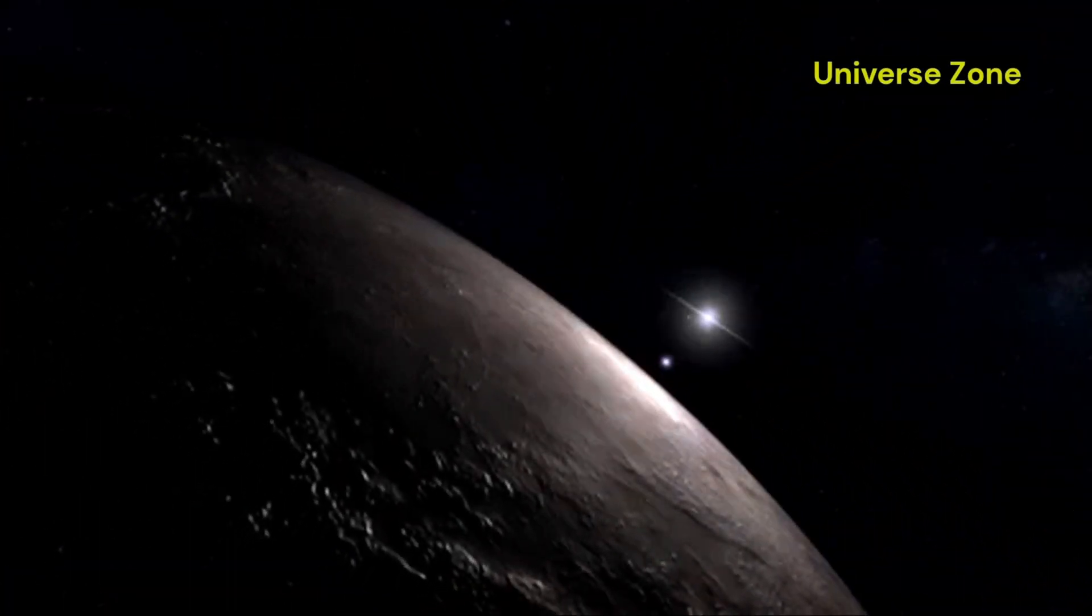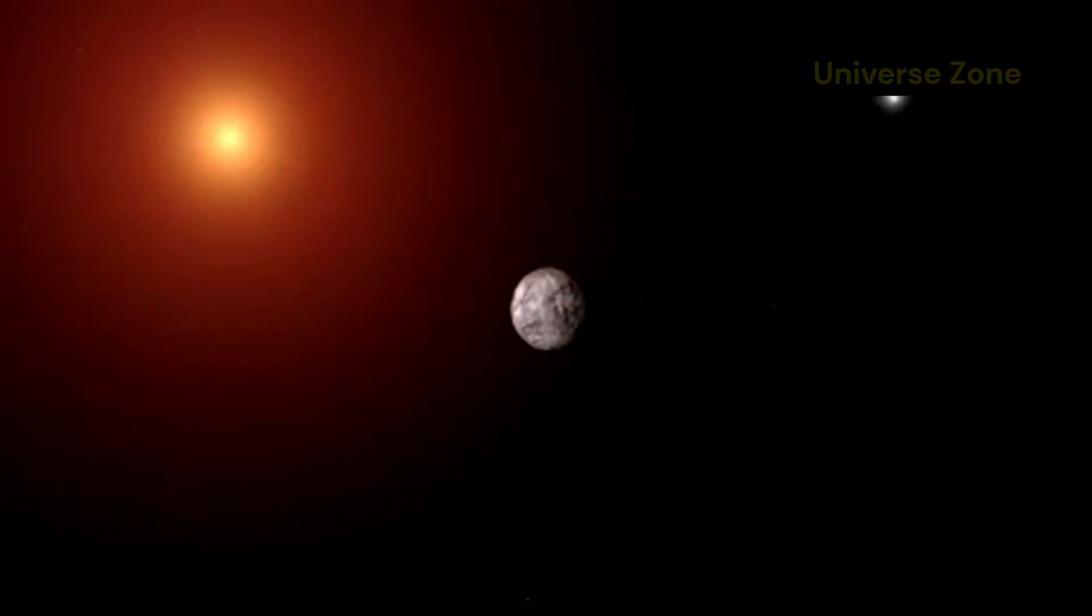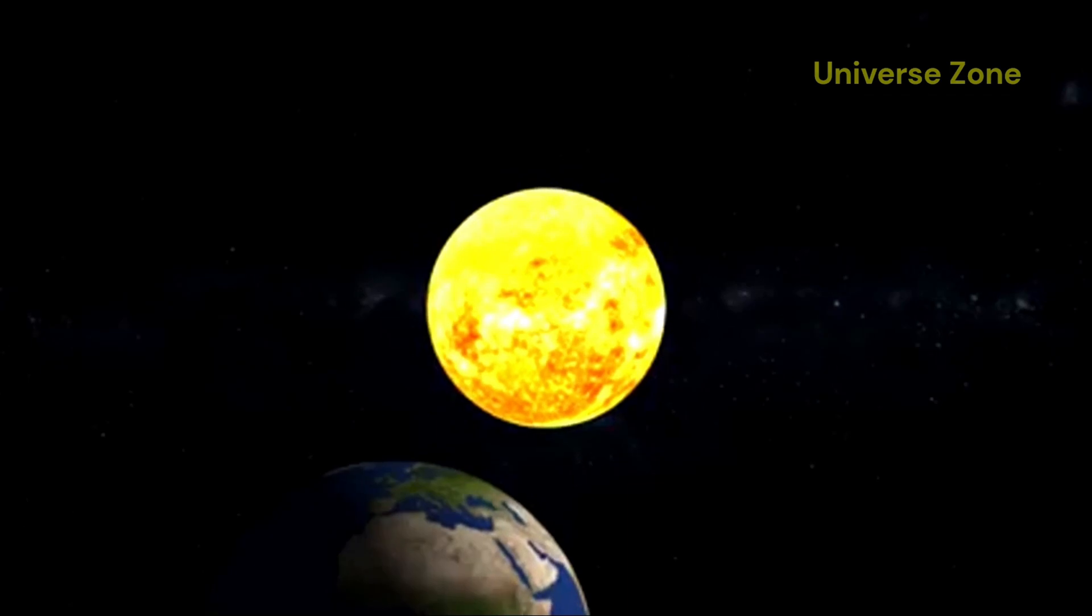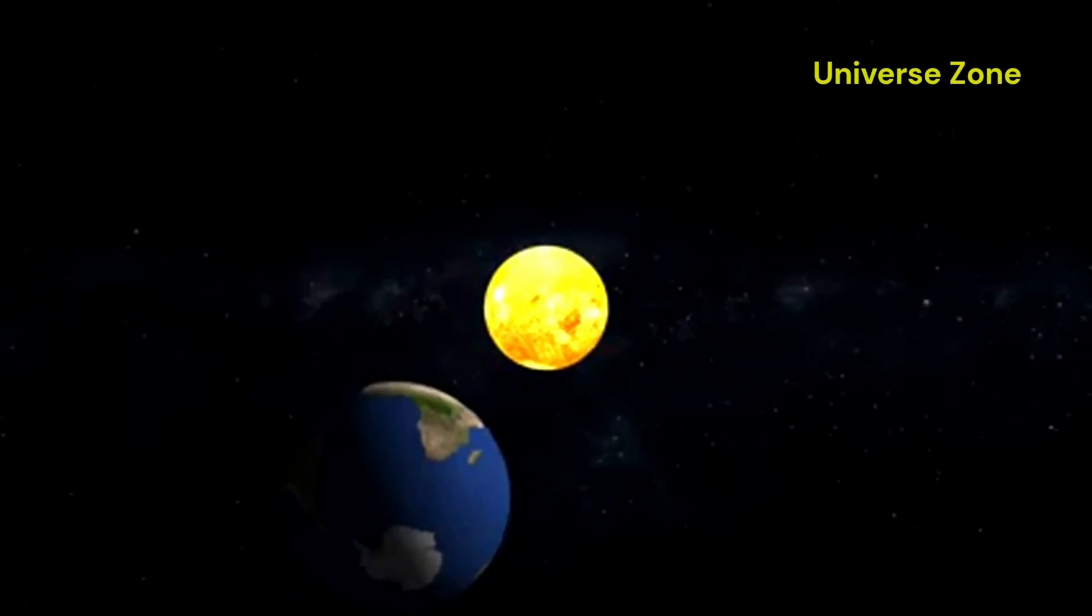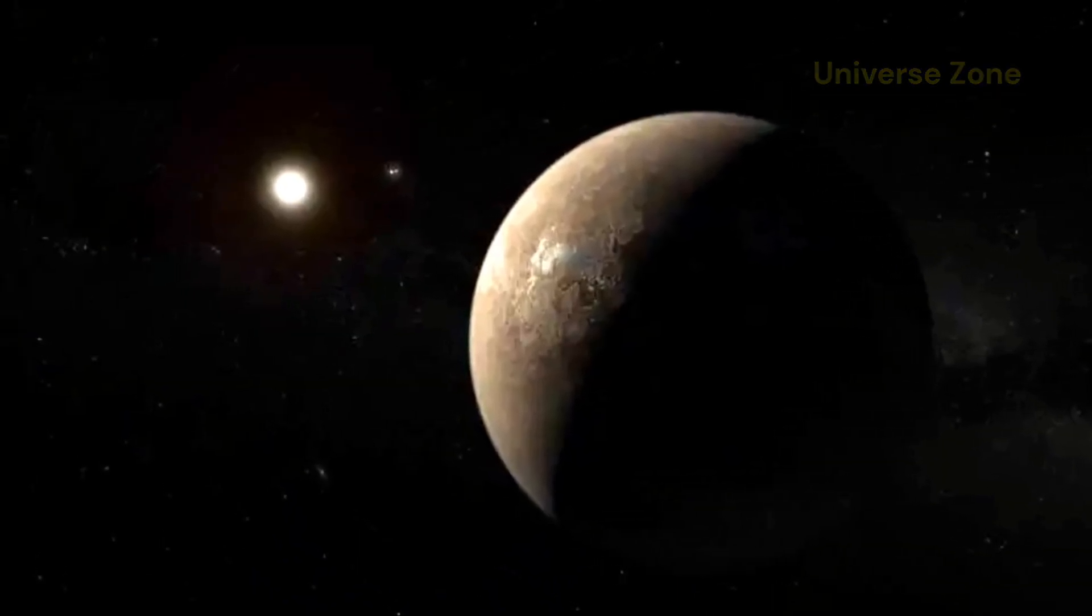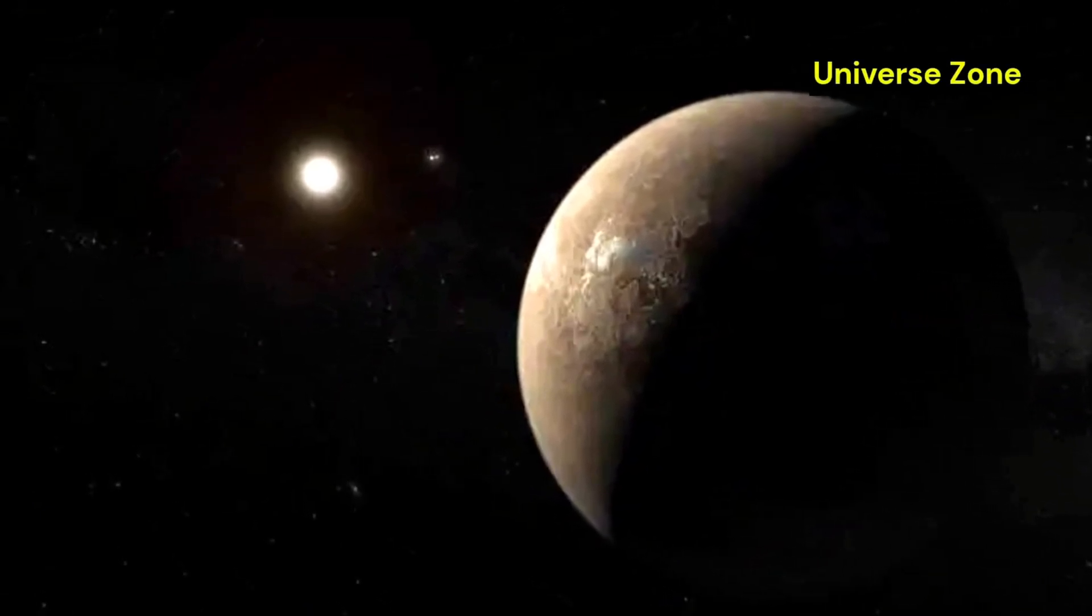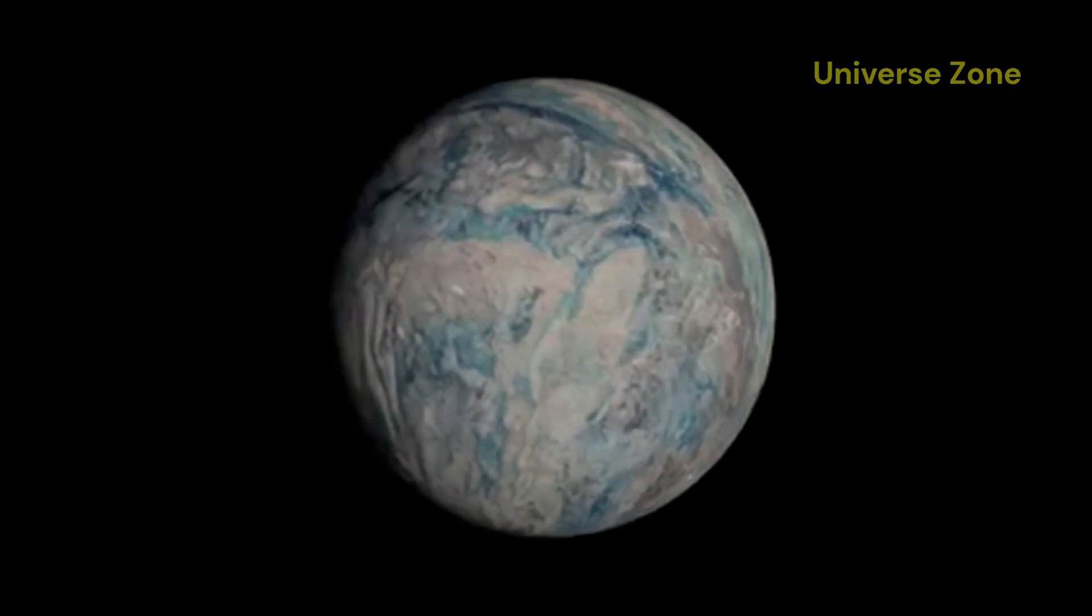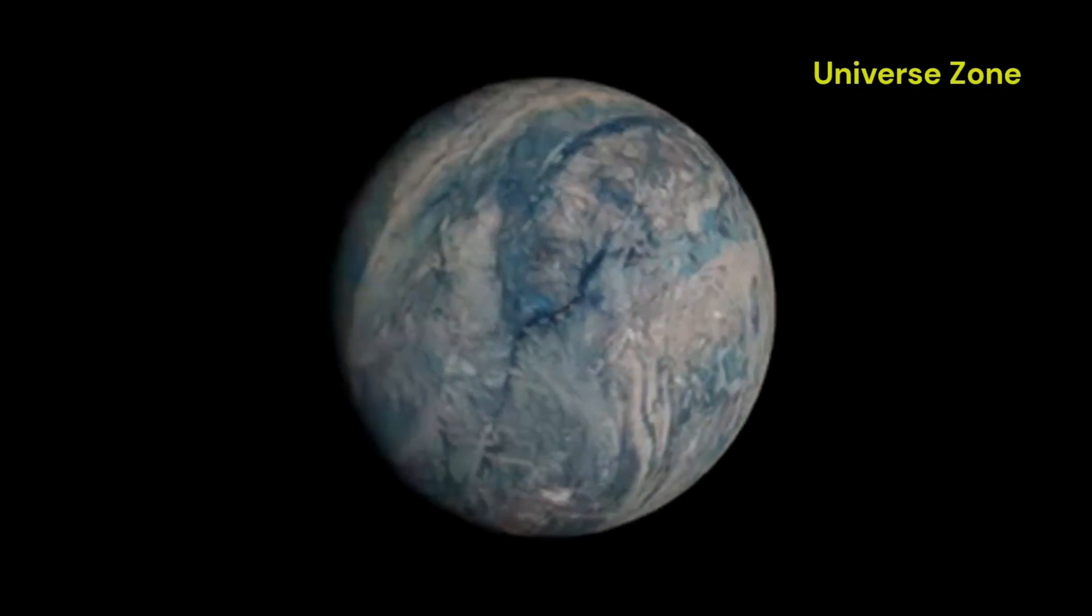Proxima b is a rocky planet that is slightly larger than Earth. It orbits Proxima Centauri, a red dwarf star, at a distance of just 7.5 million kilometers. This is much closer than Earth orbits the Sun, which is 150 million kilometers away. Because Proxima Centauri is much cooler and fainter than our Sun, Proxima b's habitable zone is much closer to the star than ours. This means that Proxima b could potentially have liquid water on its surface, even though it is so close to its star.